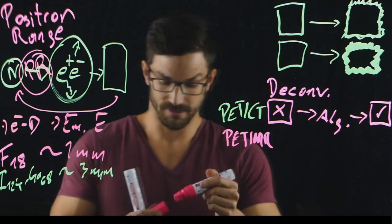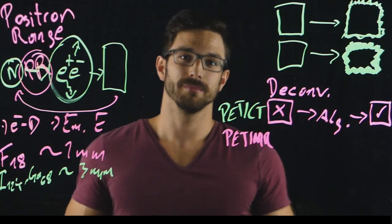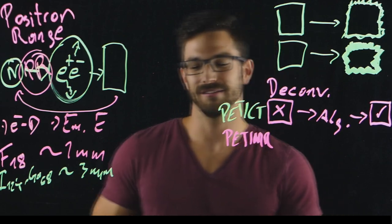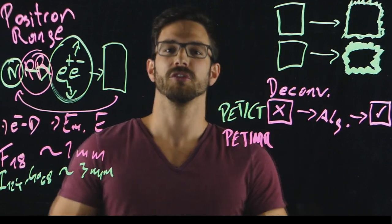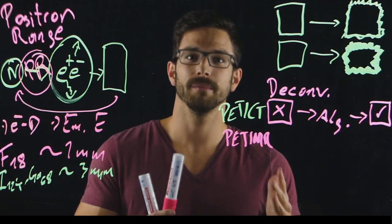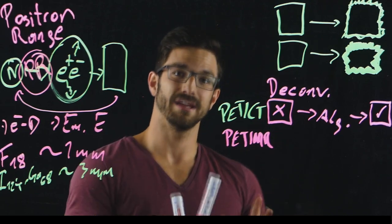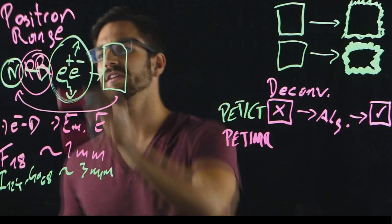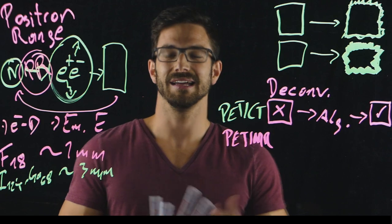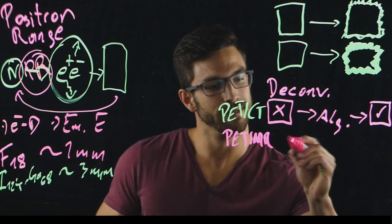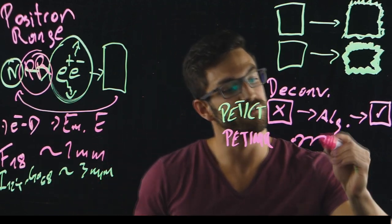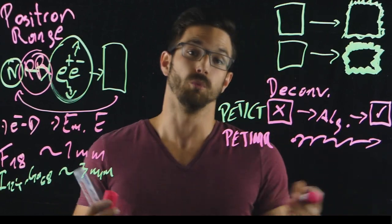Well, PET-MR, as we know, deals with external magnetic fields. So what we did in the first place was to make Monte Carlo simulations and ask ourselves what happens to positron range when we have external magnetic fields, since we know that the Lorentz force is forcing a charged particle like the positron onto a spirulated path.